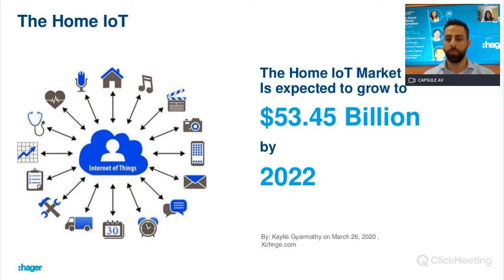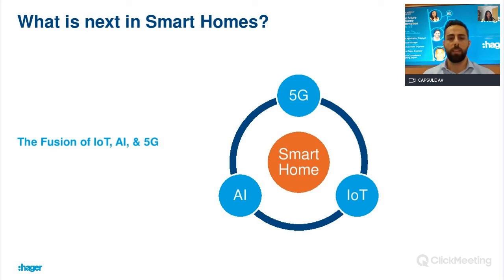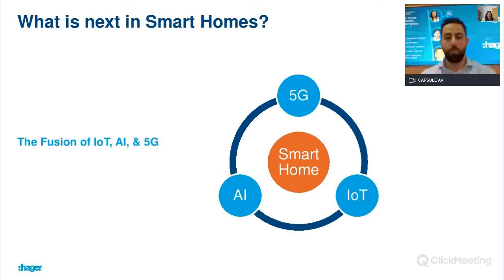Going to the main question — what's next in smart homes — we need to start with the very interesting topic of the fusion of IoT, artificial intelligence (AI), and 5G. With high-speed transmission and communication of data, intelligent behavior and machine learning, together with IoT, we expect a large amount of data to be available for users, with more and more devices able to transmit, receive and execute data in a fast, correct and smart way.